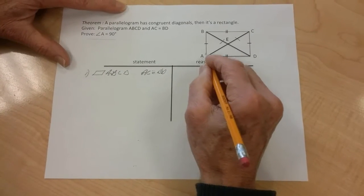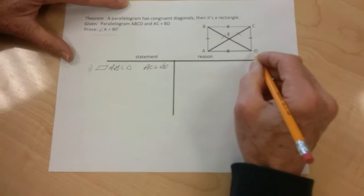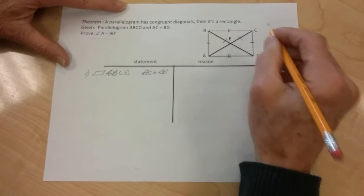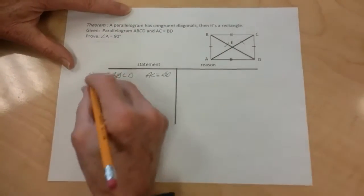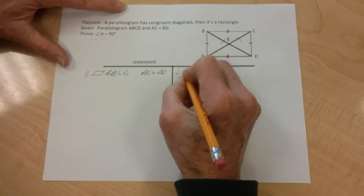Likewise, I know that AB is equal to DC because the opposite sides of a parallelogram are congruent. So that's number one, I'm going to put down my given.